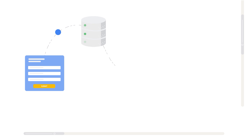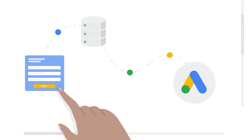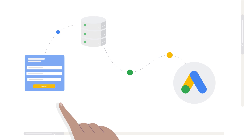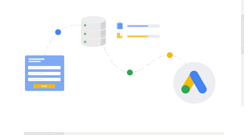This video is designed for CRM administrators who are helping to implement the Google Ads conversion tracking solution. Offline conversion tracking is a solution that enables your company to measure which leads turn into sales and revenue, so you can better manage your bids and budgets to increase your overall advertising ROI.